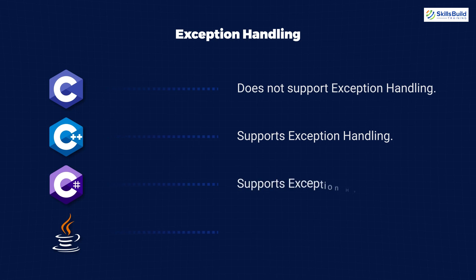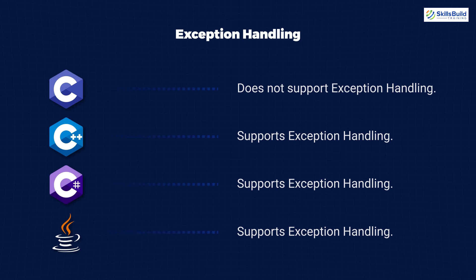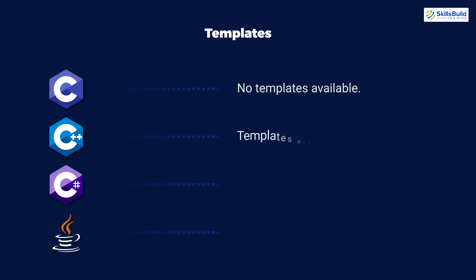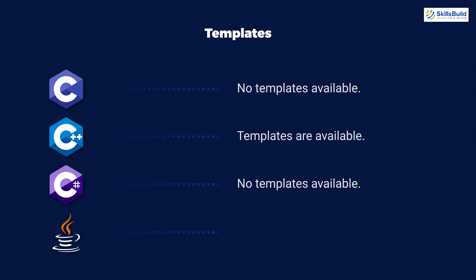For exception handling: C does not support exception handling, but C++ does support it. C# also supports exception handling and Java supports it as well. Regarding templates: there are no templates available in C, but C++ does have templates you can use.